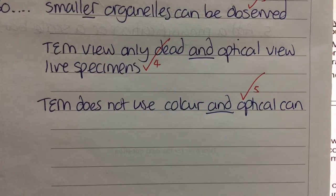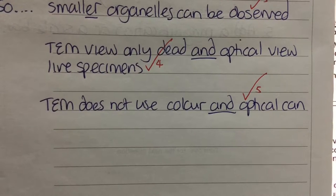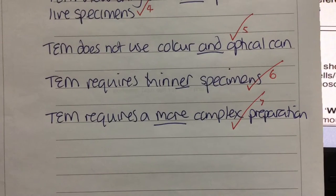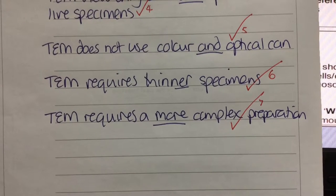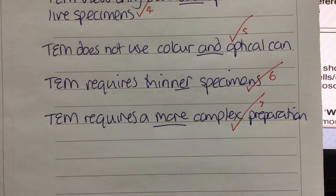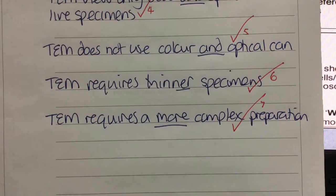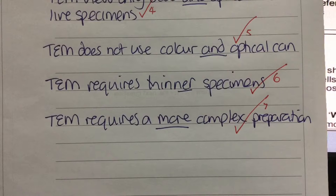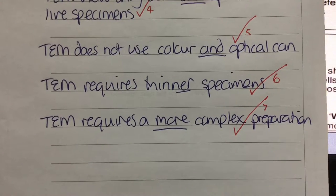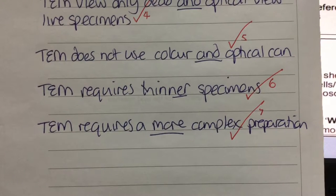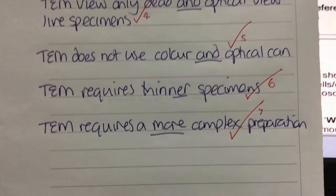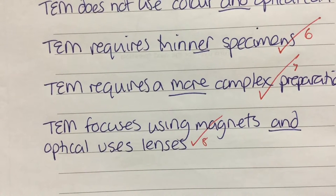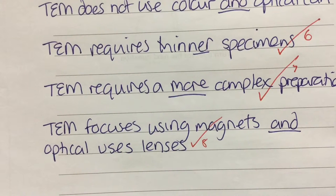We have to be clear here — we can't just say that organelles can now be observed, because large organelles like the nucleus can be observed with a light microscope. We can say that the TEM views only dead material and the optical microscope views live specimens; that the TEM does not use colour but an optical microscope can; that the TEM requires thinner specimens — 'thinner' being comparative in itself; that the TEM requires a more complex preparation; and that the TEM focuses using magnets while an optical microscope uses lenses.